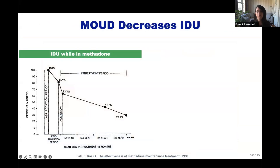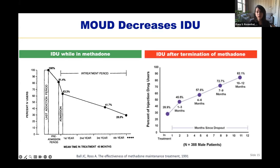One of the most important aspects of medication for opioid use disorder is that it decreases drug use frequency and injecting drug use. While patients on MOUD do not always achieve abstinence, they almost always have a significant decline in substance use frequency. In people who inject drugs initiating methadone, the percentage who injected drugs steadily decreased over the course of treatment. However, in those who stopped methadone maintenance, there was a steady return to injecting drug use over time.